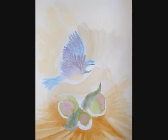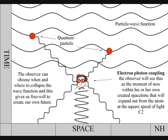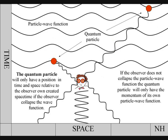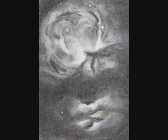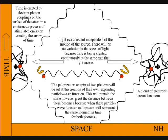We have entanglement, because the photons will only have a position in time and space if the wave particle function collapses into a moment of time. If the quantum wave particle function does not collapse, the photons will only have the momentum of their own quantum wave particle function. Photons are moving through space, but not time, as an expanding quantum wave particle function. The polarisation, or spin, will be set at the creation of that quantum wave particle function.